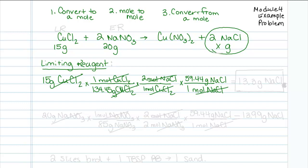And one mole of sodium chloride is going to have 59.44 grams. So based on this setup, I've converted from grams to moles, step one, mole to moles, step two, and mole to grams, step three. So here we are in our calculator, 15 divided by 134.45 times 2 times 59.44, and I get 13.3 grams.